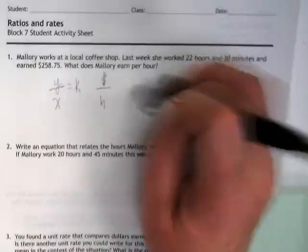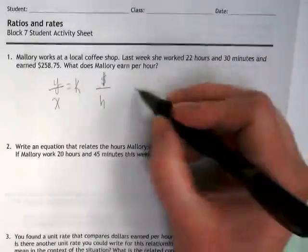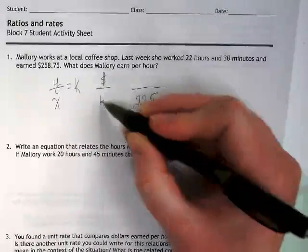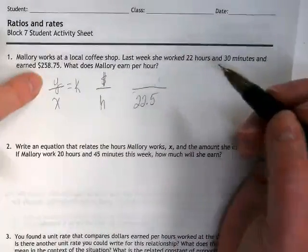Oops, I just did that wrong. I wanted to put that on the bottom. I just wrote it first because it was first in the problem. So my 22.5 is going to go on the bottom because that goes with the hours. And how much is going to go on the top?